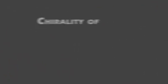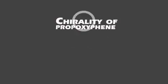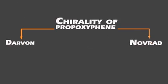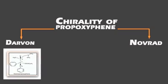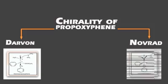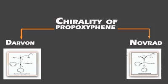Commercial names of propoxyphene: Darvon is the dextro isomer, which is d-propoxyphene. Novrad is the levo isomer, which is l-propoxyphene.